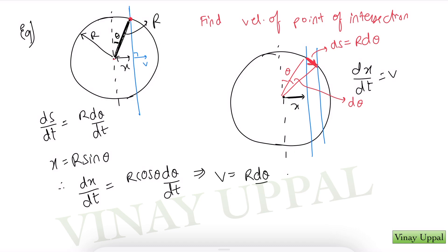So I'll have v is equal to r d theta by dt is what we want, times cos theta. So r d theta by dt, which is the point of intersection velocity, that will be v by cos theta.